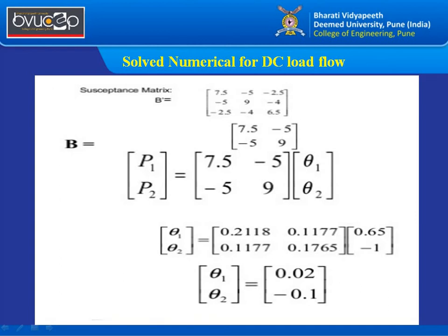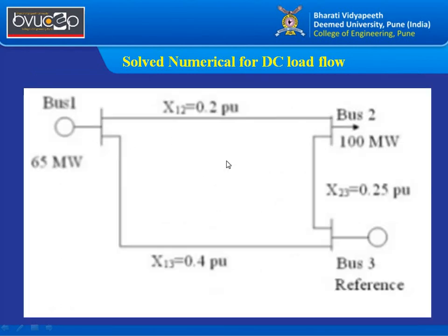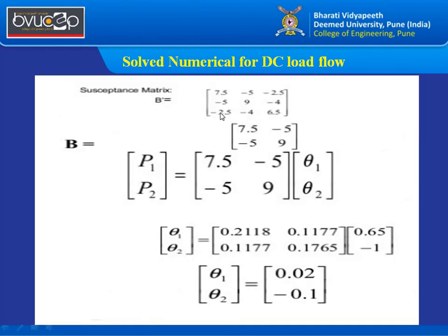The susceptance matrix Bx is obtained from the bus admittance matrix calculation. The result is the B' matrix with values: diagonal element B'11 = 7.5, B'22 = 9, and off-diagonal elements are negative. Since bus 3 is the reference bus, we only need a 2×2 square matrix: [7.5, −5; −5, 9]. Note this is a symmetrical matrix. The power vector P = [P1, P2]ᵀ = [0.65, −1.0]ᵀ, and the angle vector is obtained as θ = Bx⁻¹ · P, where Bx⁻¹ is the inverse of the 2×2 matrix.